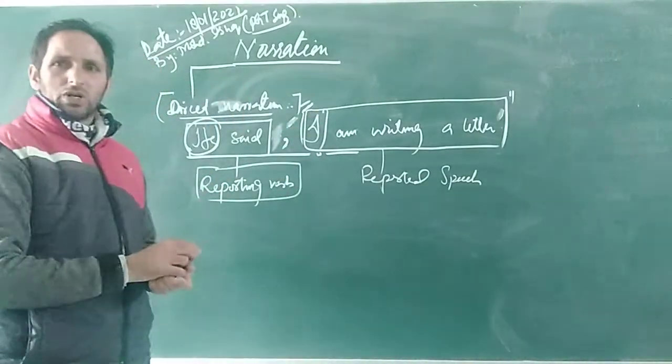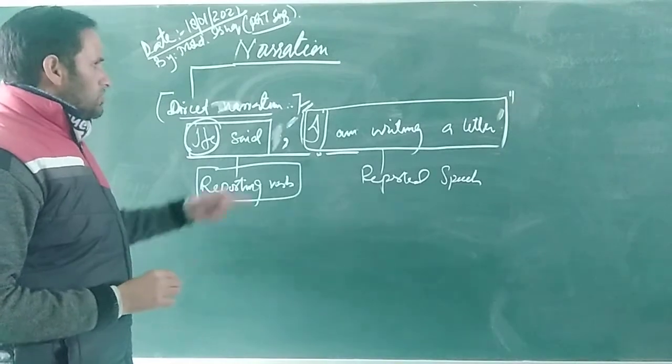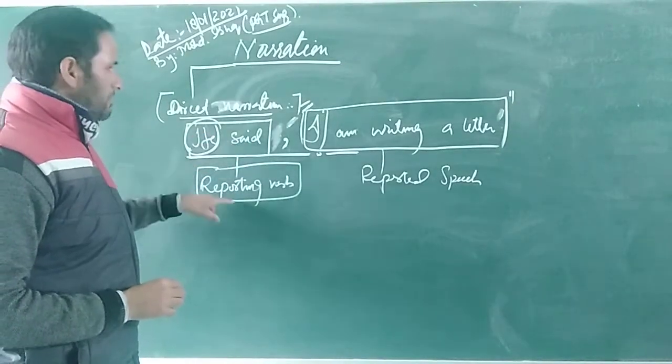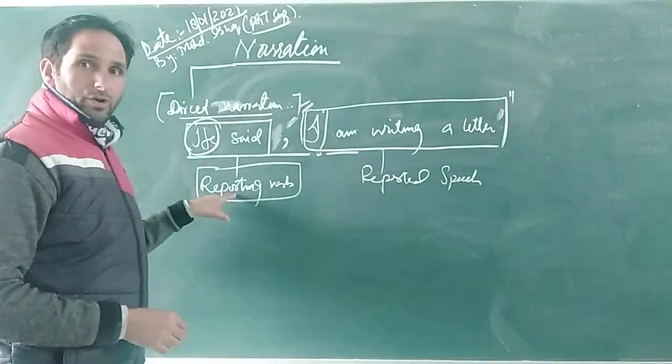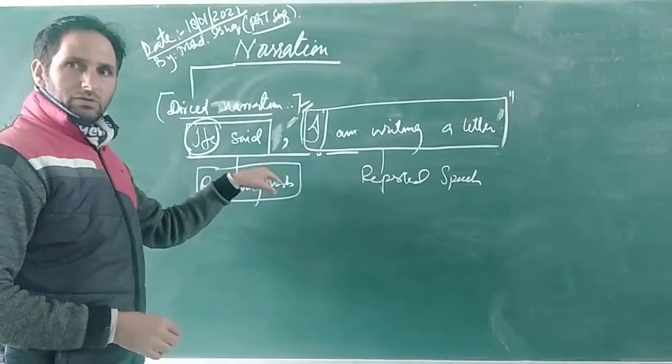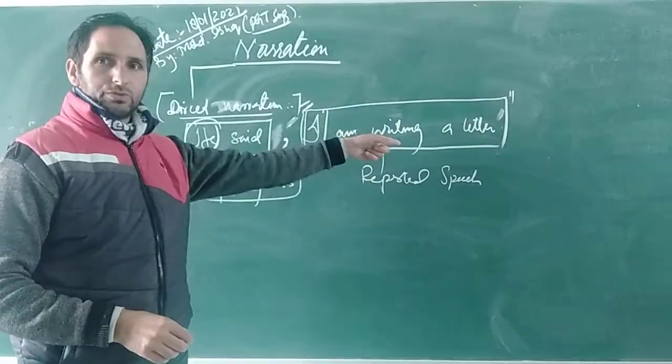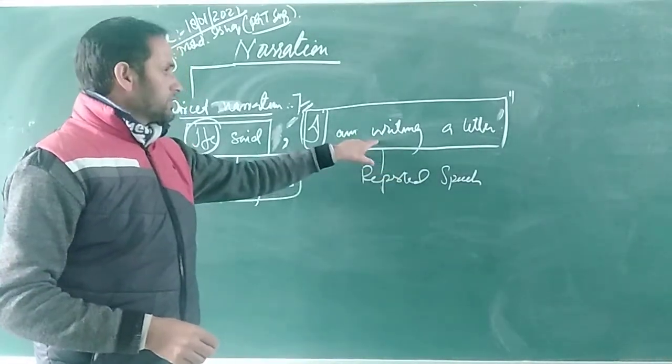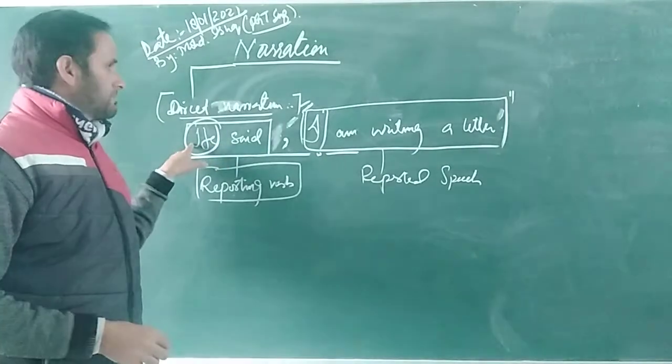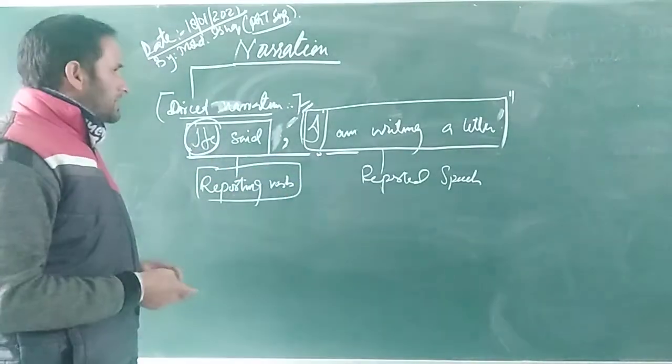But in this direct narration, when the reporting verb and reported speech are separated by a comma and reported speech is put under commas and inverted commas, this is the place where we use capital letters after a comma. This is called reporting verb and this is called reported speech. Let me repeat it again. Why is this called reporting verb? Because it reports what is given in the reported speech.